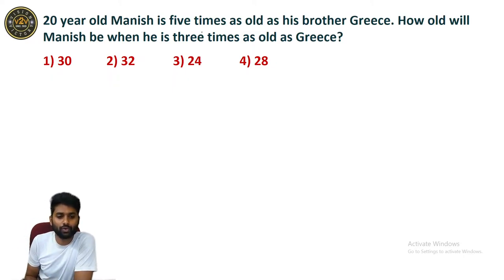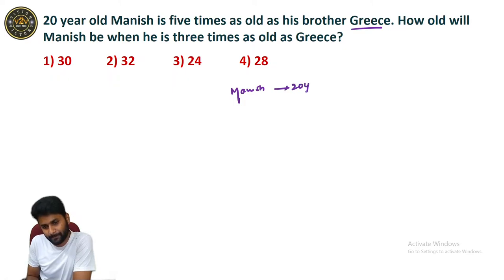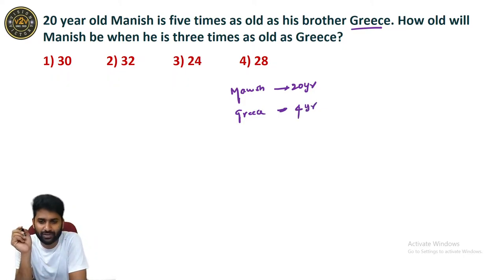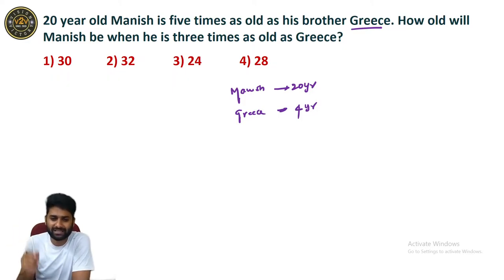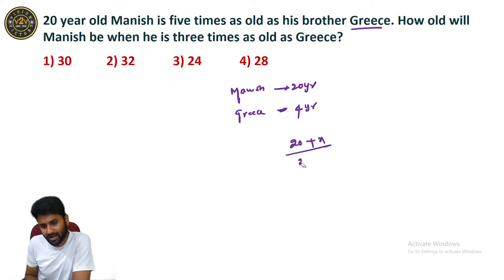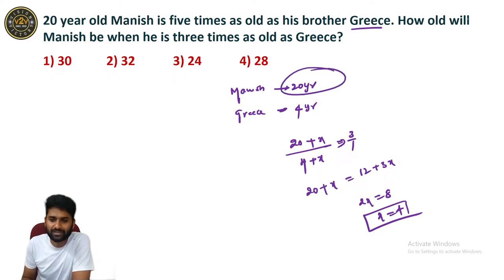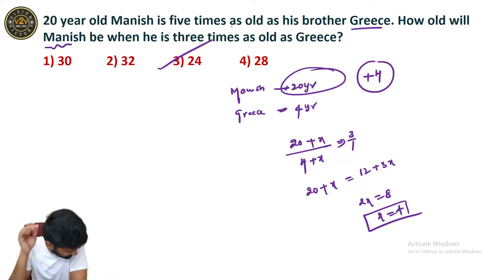Manish is 20 years old and is 5 times as old as his brother. Since Manish is 5 times, Greece's age is 20 ÷ 5 = 4 years. Manish is 20, Greece is 4. How old will Manish be when he is 3 times as old as Greece? After x years: 20 + x = 3(4 + x). This gives 20 + x = 12 + 3x, so 2x = 8, x = 4. Manish's present age is 20, after 4 years he will be 24. Answer: 24 years.